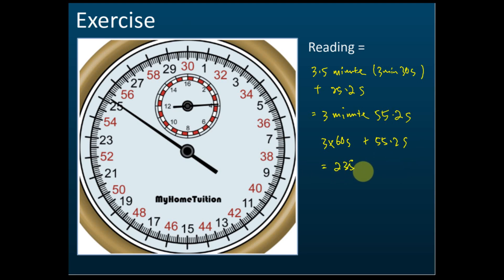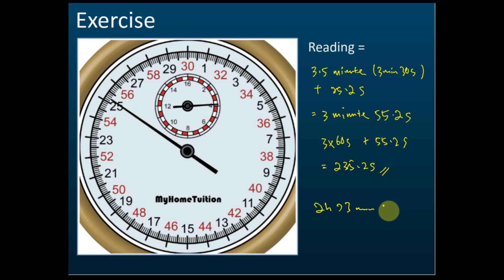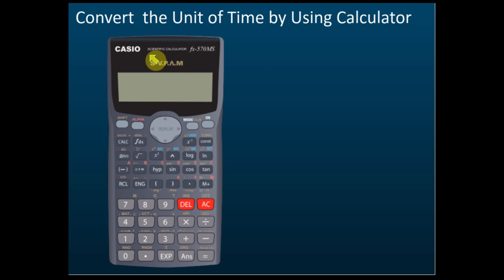Sometimes they may give you hours — like 2 hours, 23 minutes, and 27 seconds — and want you to convert this to seconds. In your calculator, there is an easy way to do this conversion without doing it manually.